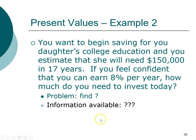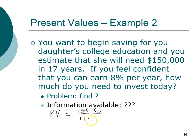Using the formula: PV = $150,000 divided by (1 + 0.08) to the power of 17. Solving that gives us $40,540.